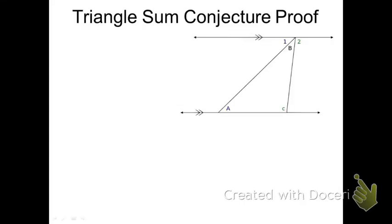Let's start off by proving that. If we look at this picture, we have a triangle with angles A, B, and C. We also have two parallel lines, one at the base of the triangle and one at the other end of the triangle. We're going to use those two lines and the triangle to help us prove that no matter the triangle, the interior angles will always add up to 180.